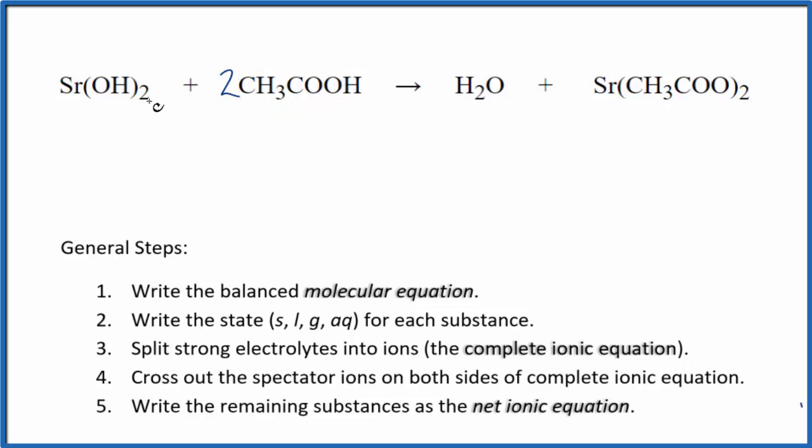Then I have the two hydrogens plus these two hydrogens. So I have four total hydrogens. I'm going to put a 2 here. That balances those. I have 2 times 1, 2 oxygens, 2 times 1, 2 oxygens. This is the balanced molecular equation.